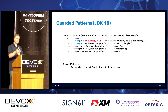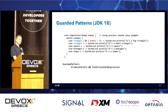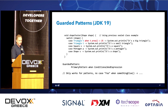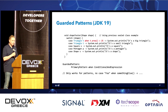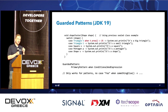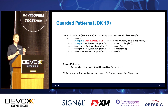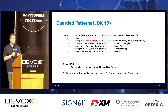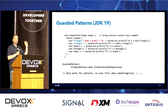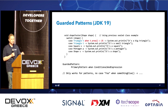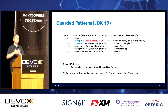In JDK 18, guarded patterns used the `&&` operator — `case Triangle t && t.area() > 25`. In JDK 19 they changed it to use `when`: `case Triangle t when t.area() > 25`. I'm not entirely convinced this was a good idea — we all know the `&&` operator — but it does make it more readable in English: 'case Triangle t when area is greater than 25'. Importantly, `when` is a contextual keyword — it only behaves as a keyword in this specific place.